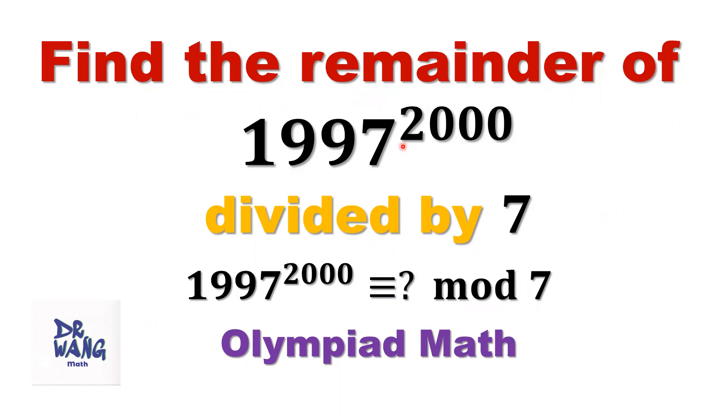Here is the question: Find the remainder of 1997 to the power 2000 divided by 7. This is the mathematical notation: 1997 to the power 2000 divided by 7, what is the remainder?